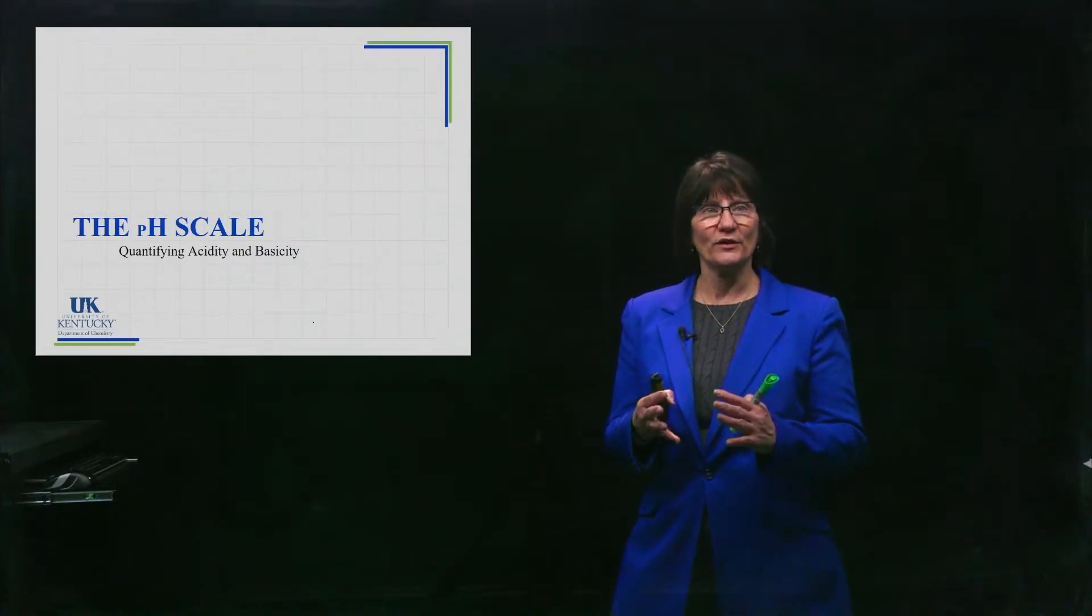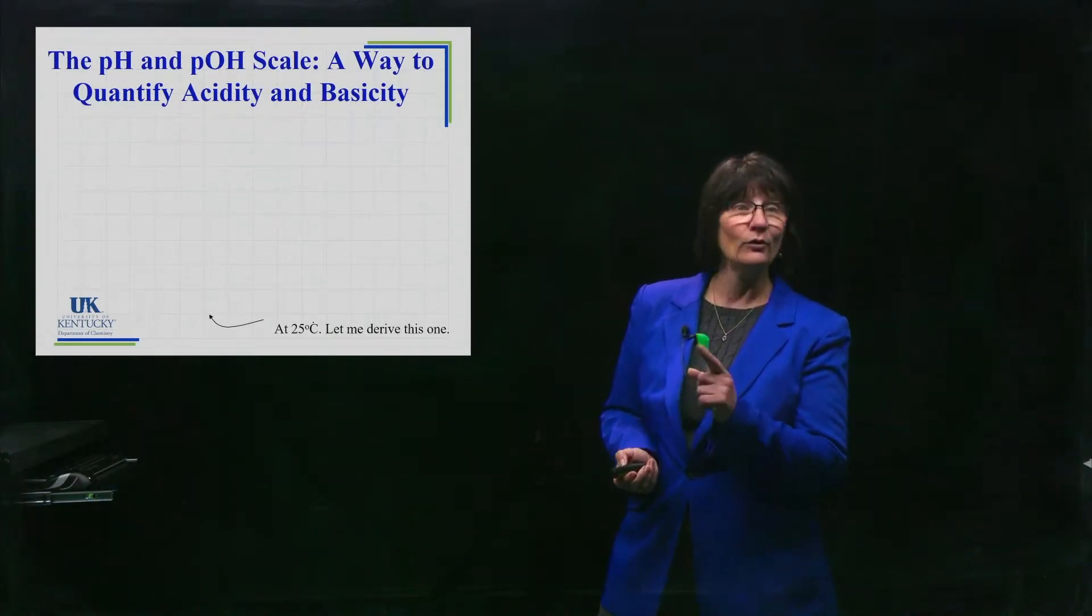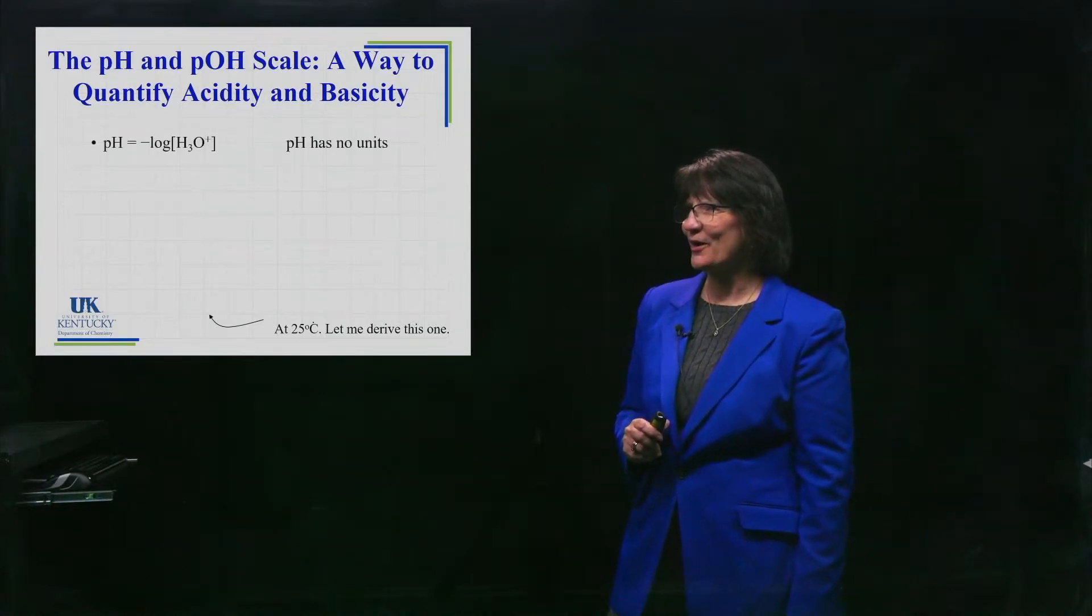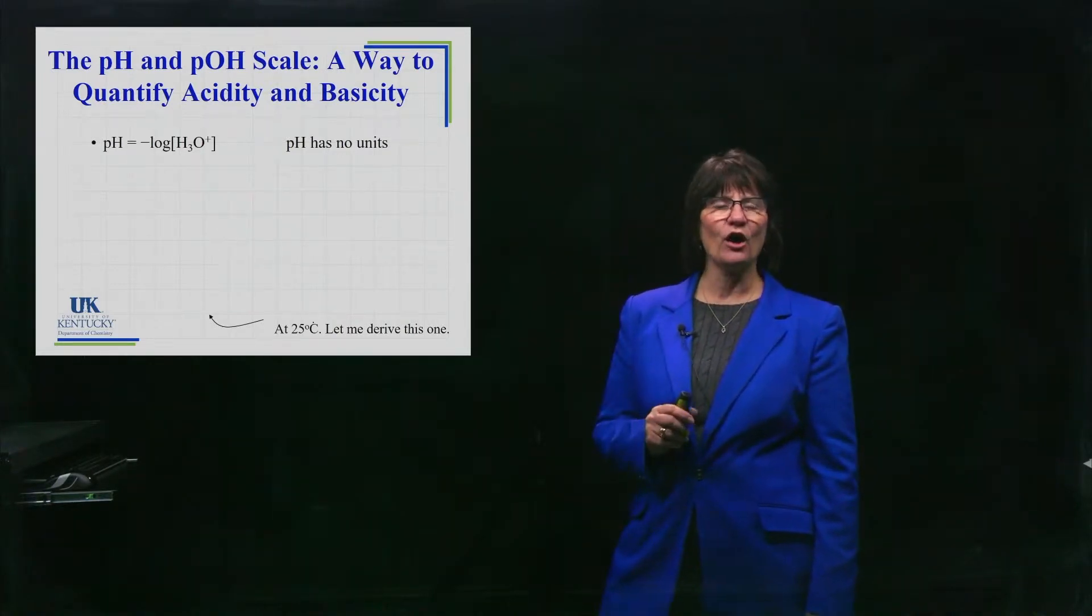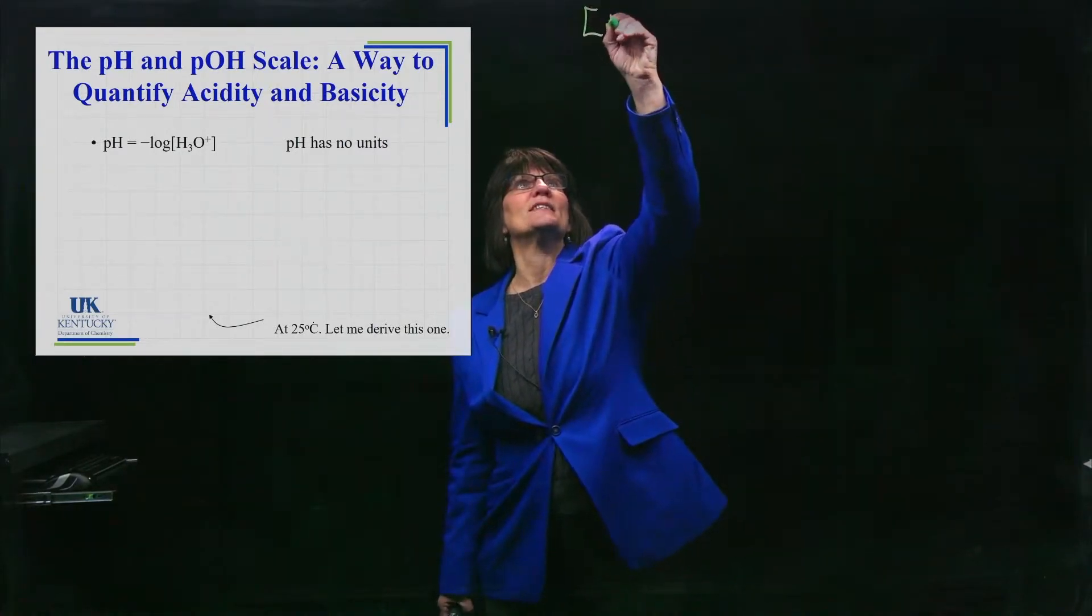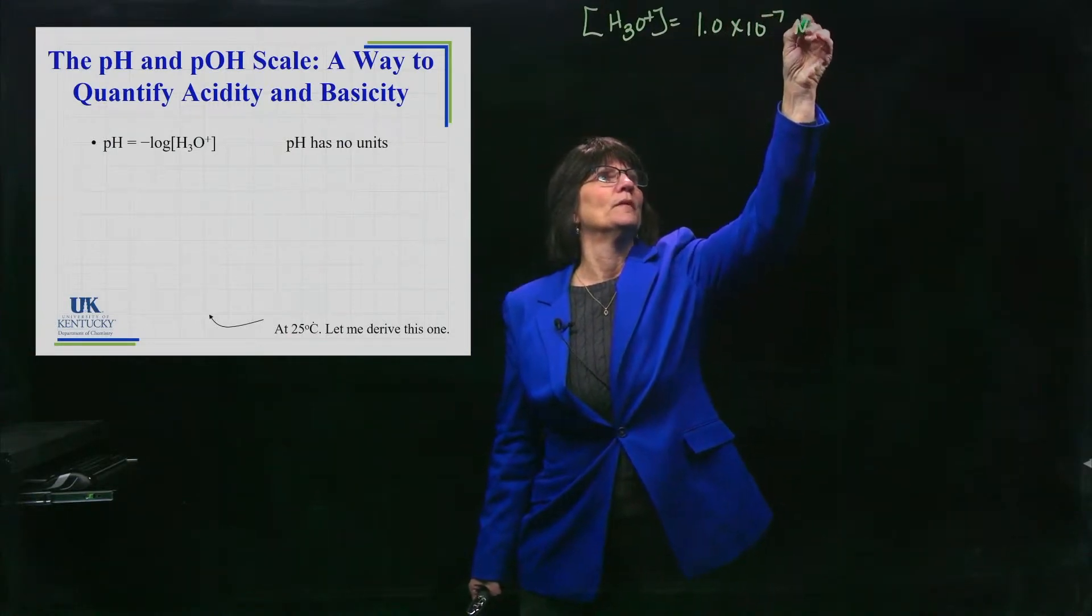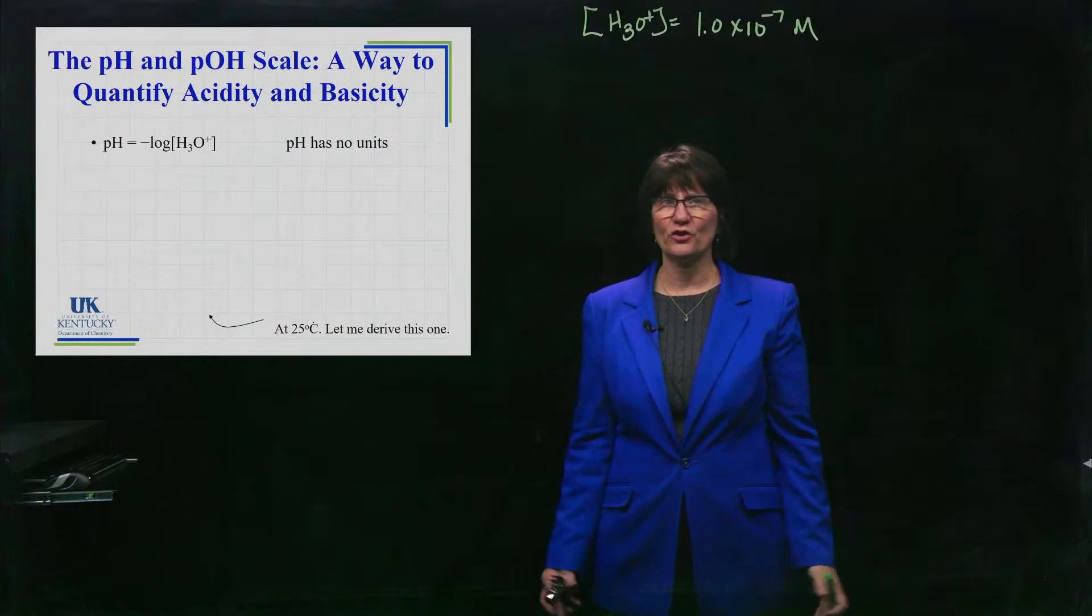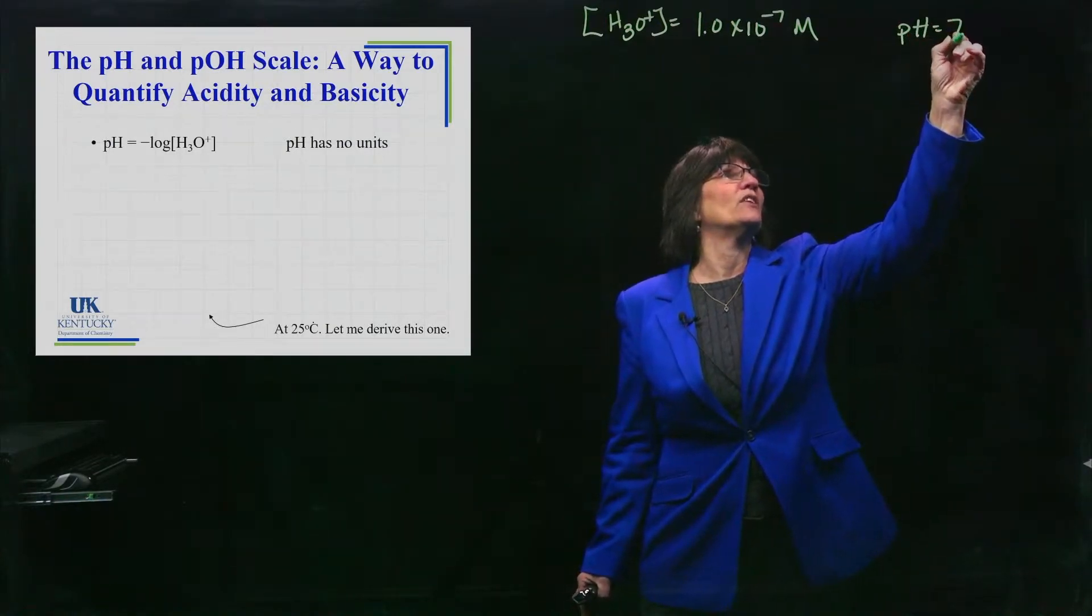Let's talk about what this pH scale is, and it is our way of really quantifying, giving a number value to how acidic something is or how basic a solution is. Here is the definition of pH: it is the negative log of the H3O+ concentration. You could give somebody the H3O+ concentration and say something like this: The H3O+ concentration is 1.0 times 10 to the minus 7 molar. Or, you could take the negative log of that number, and you could say the pH is equal to 7.00. That says exactly the same thing.